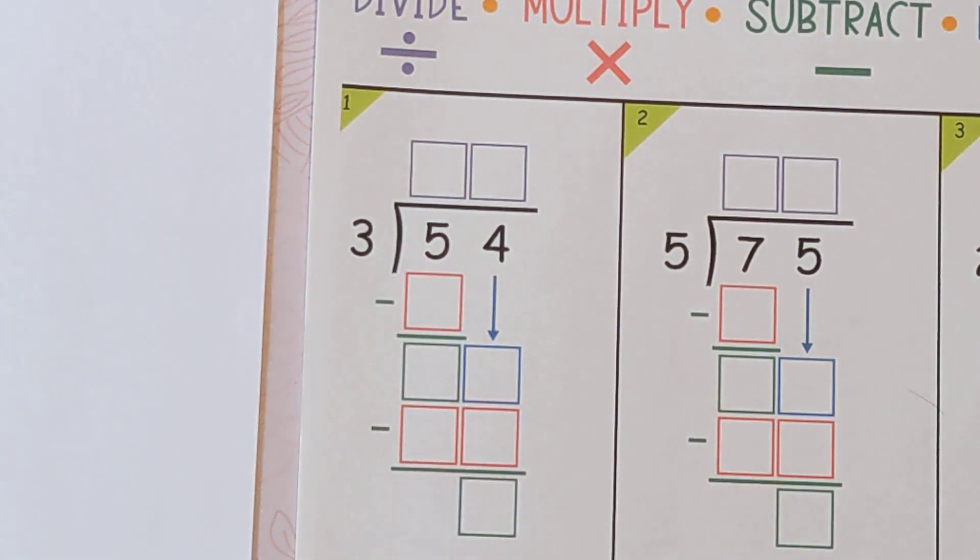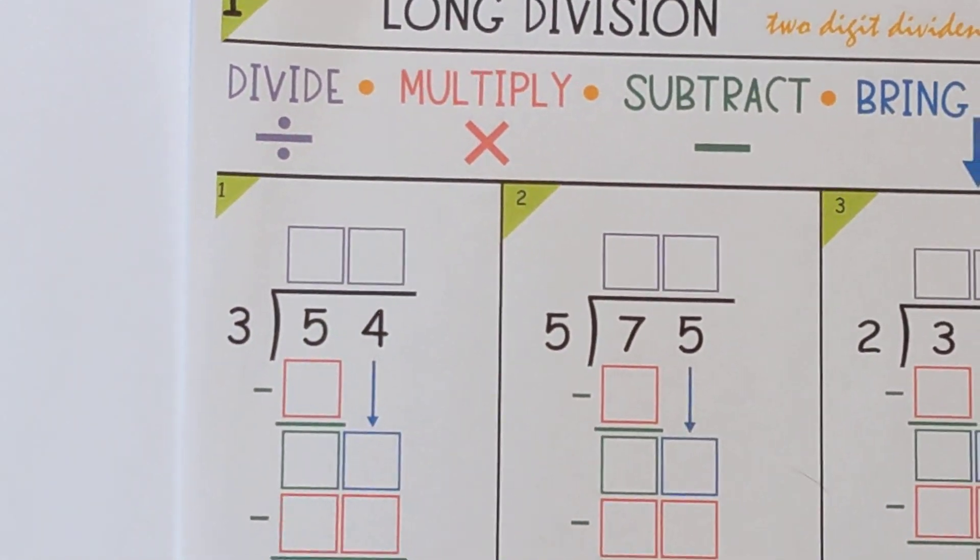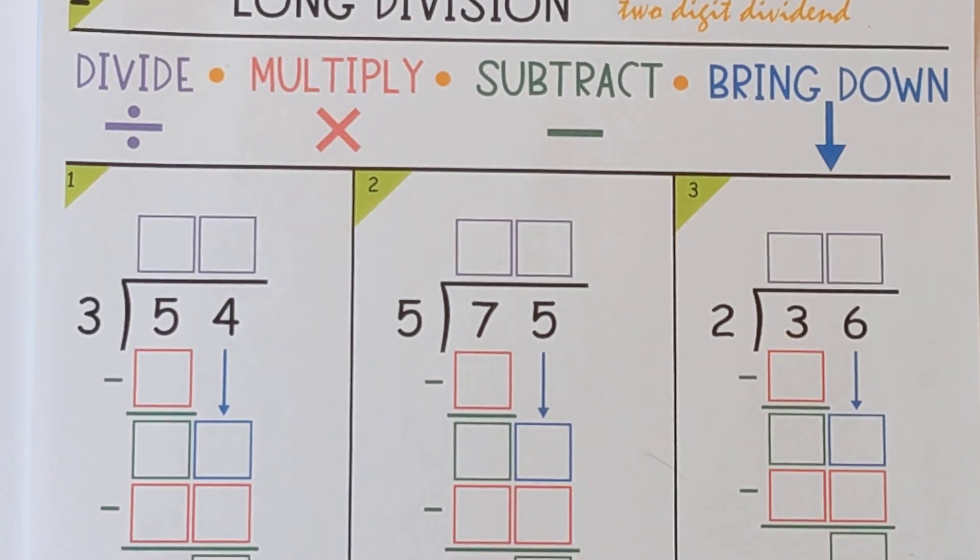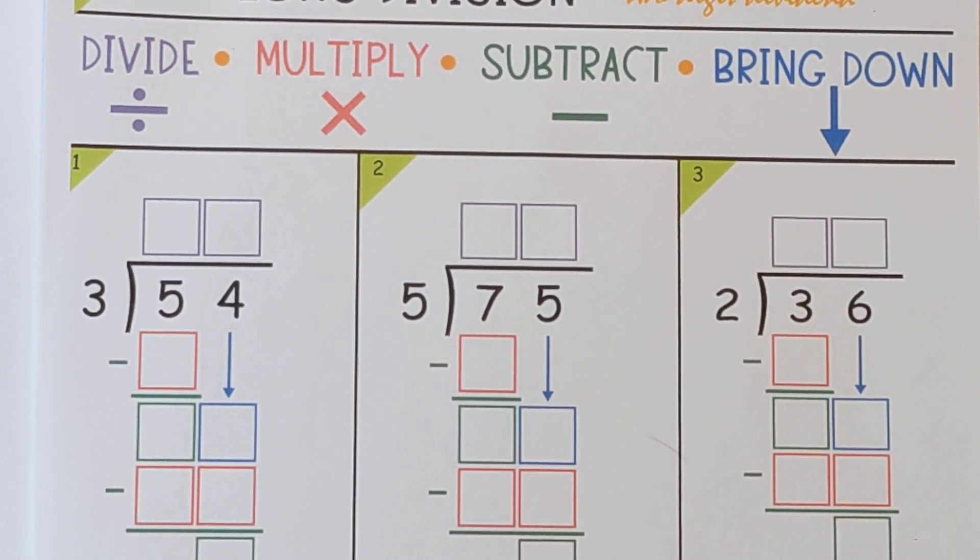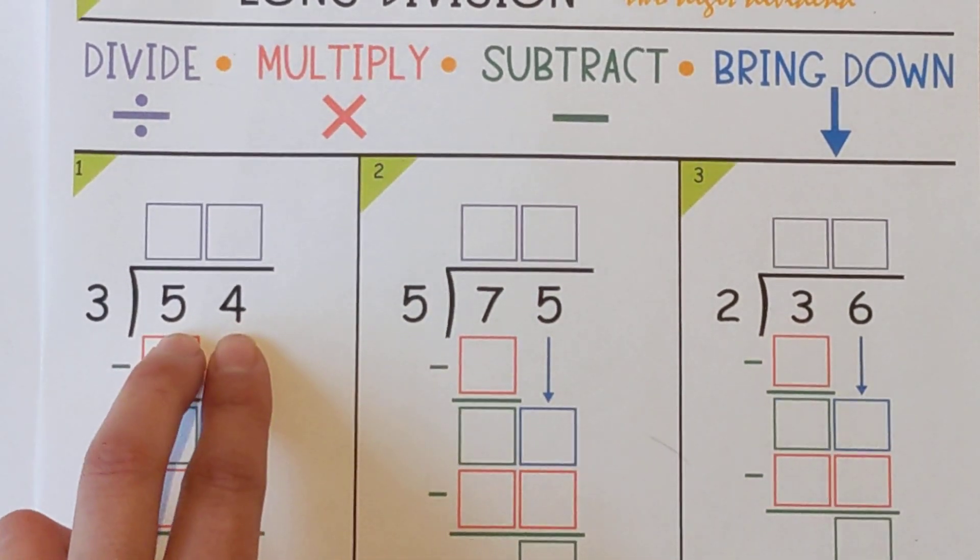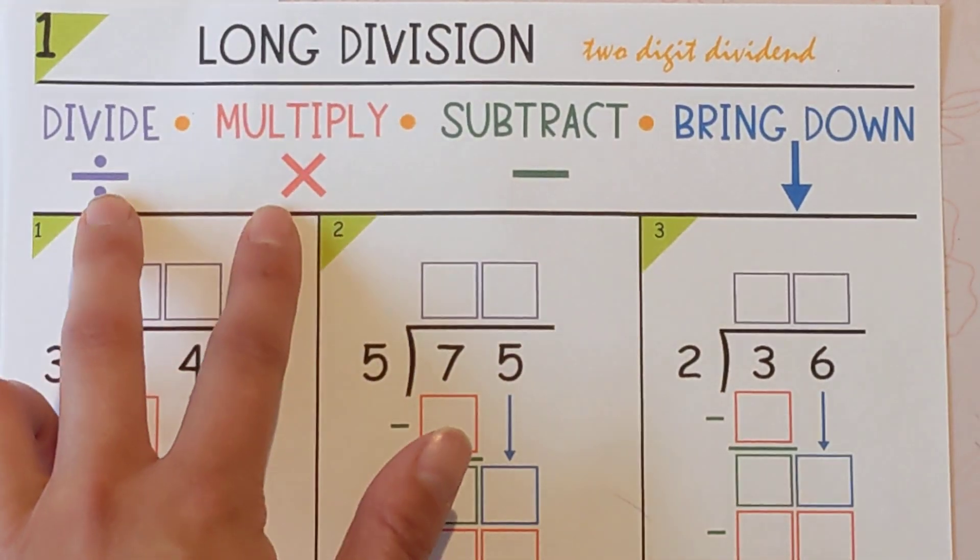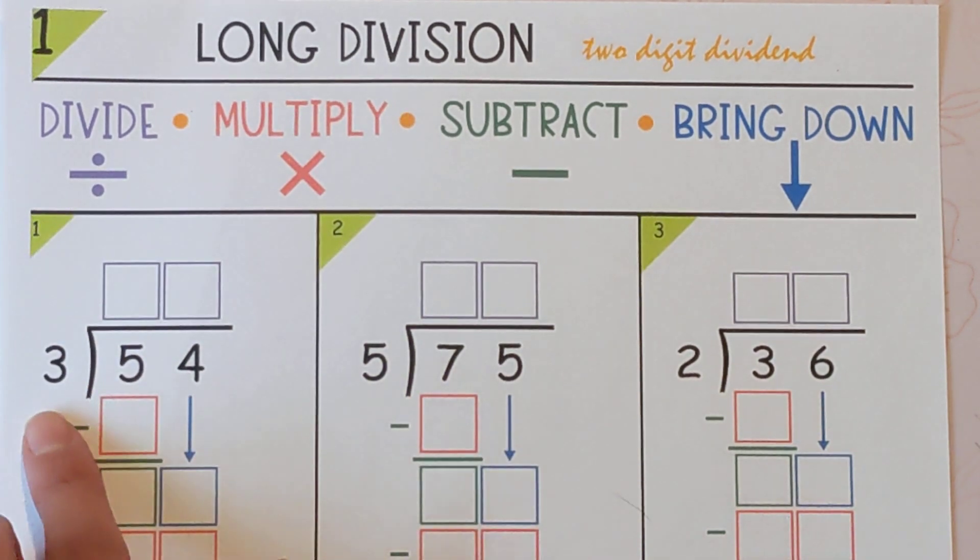For example, if I said something like, I have 54 donuts and I put them into three boxes, how many go in each box? So this is the big number that we're dividing up into three. So when we do these steps, we're going to be using that three.